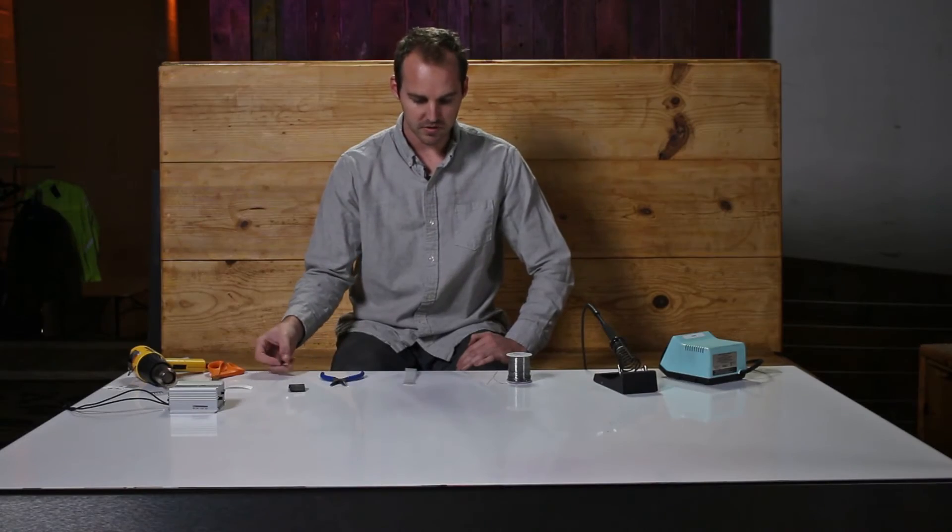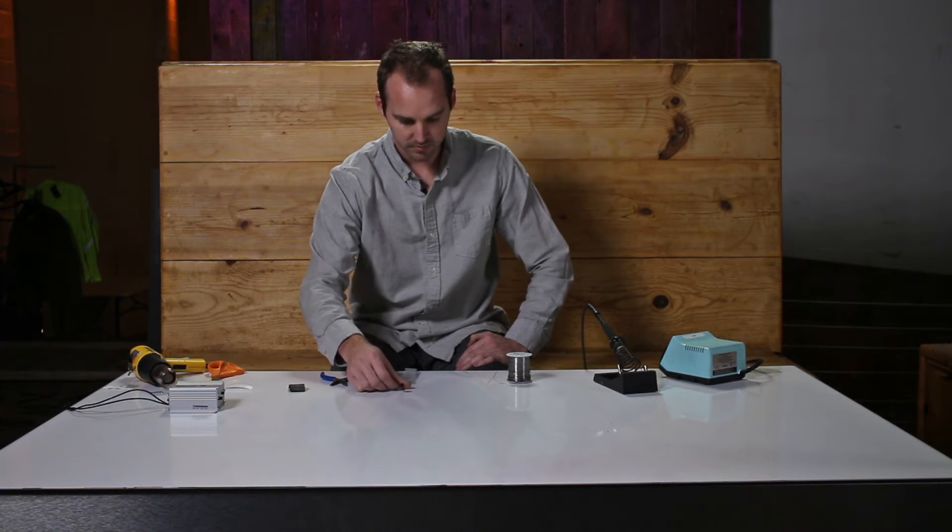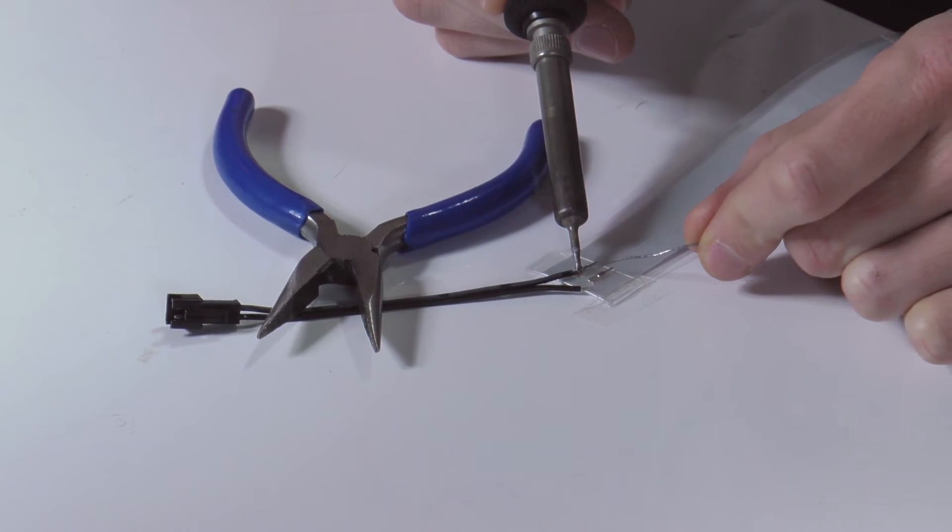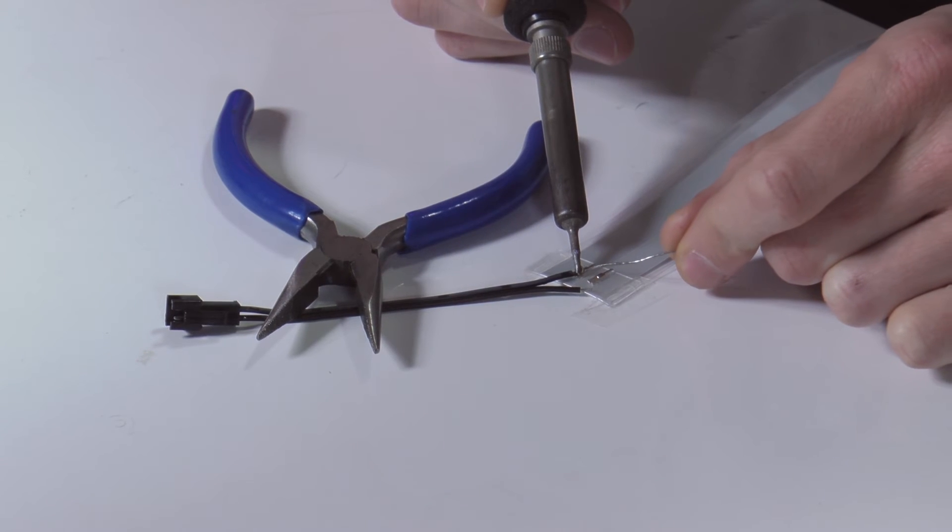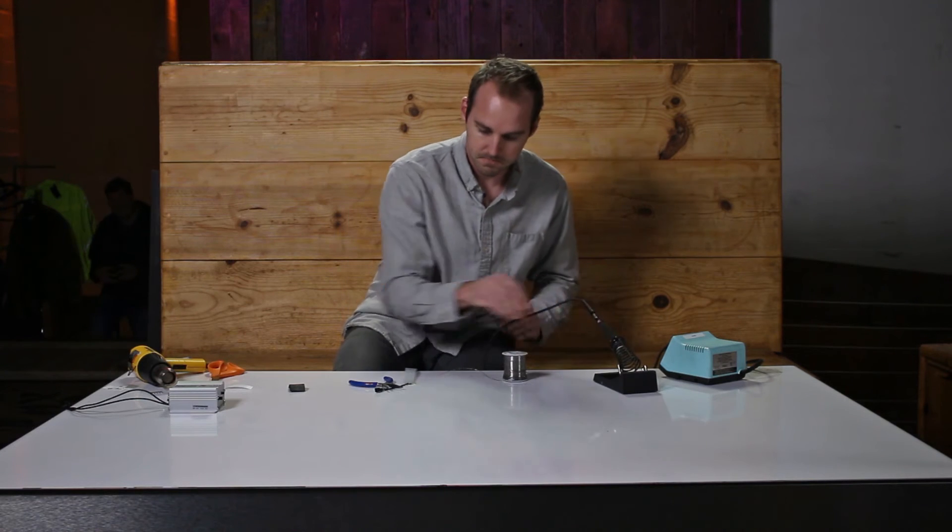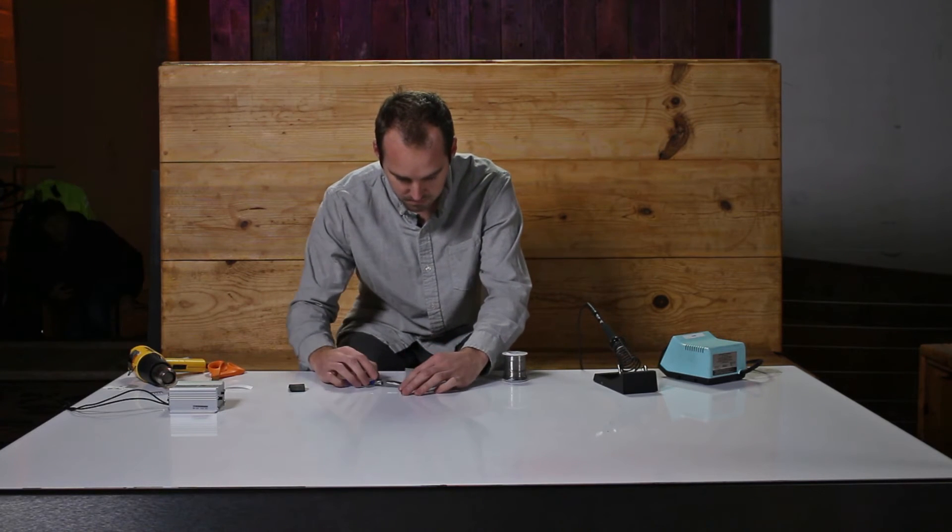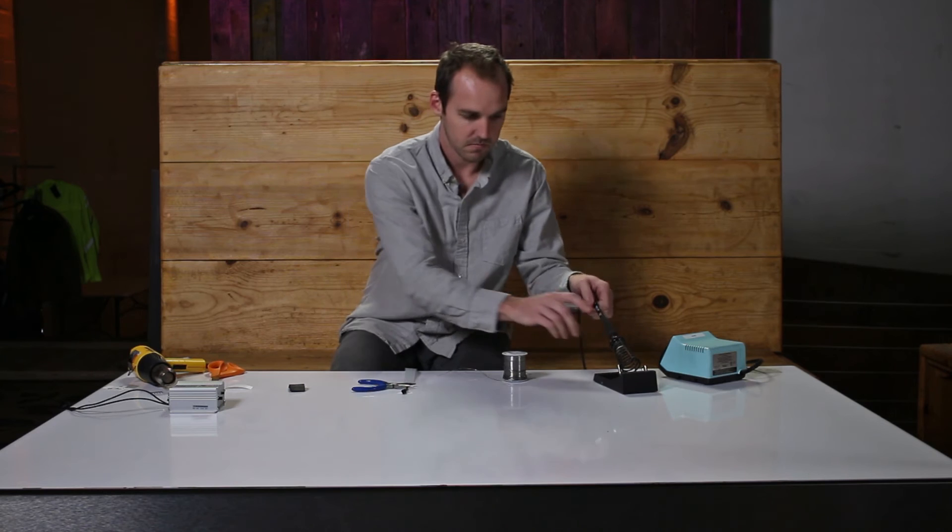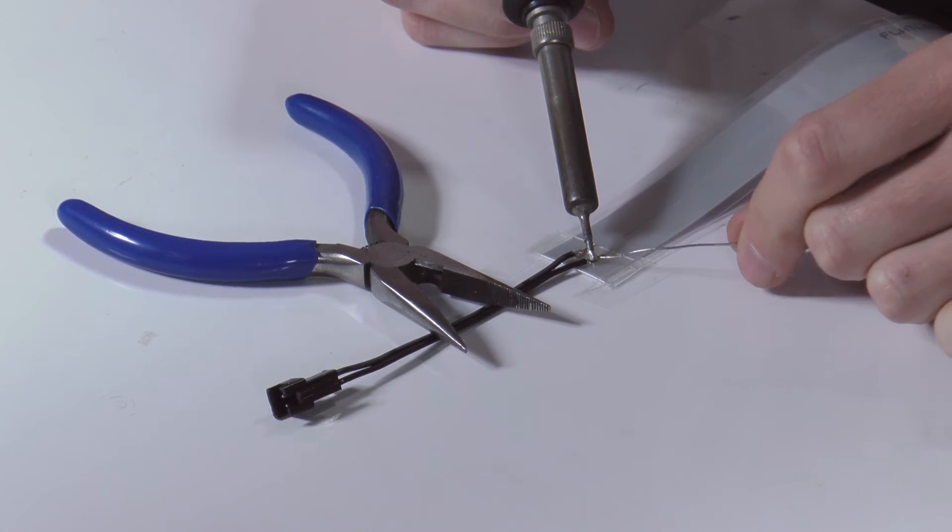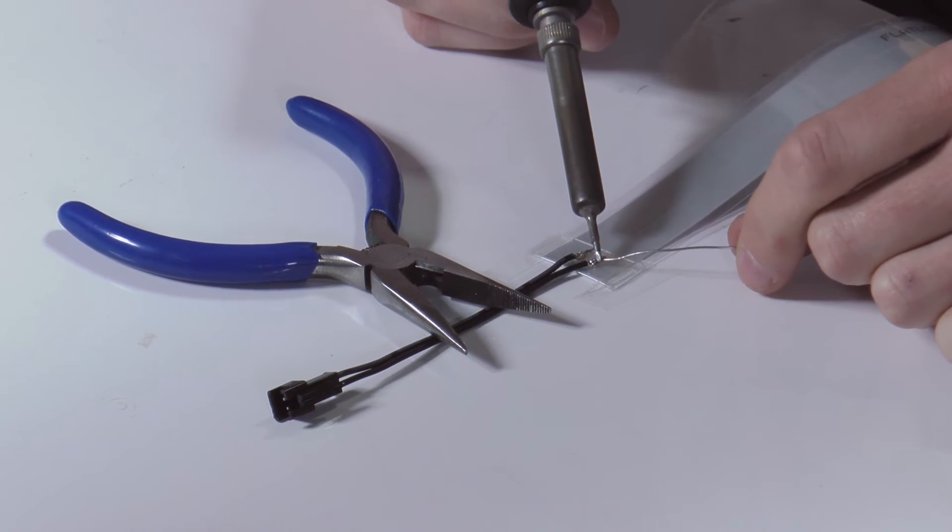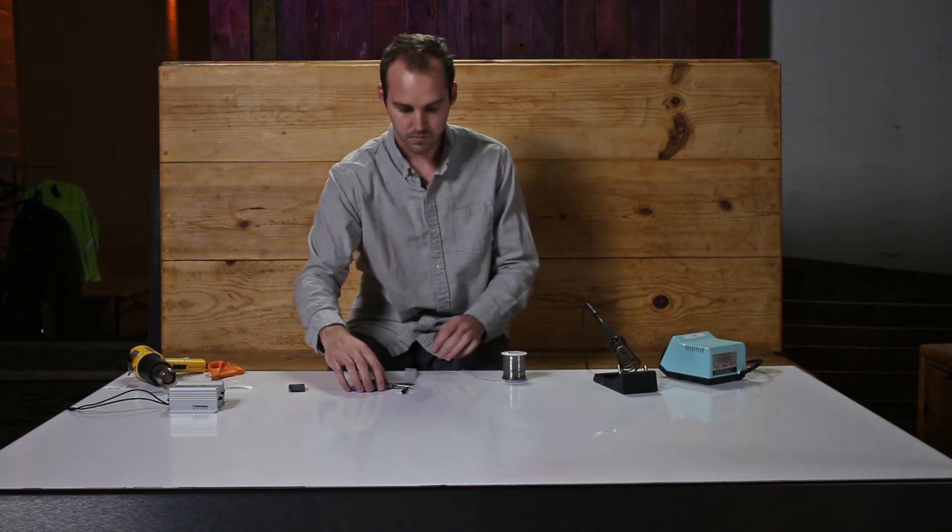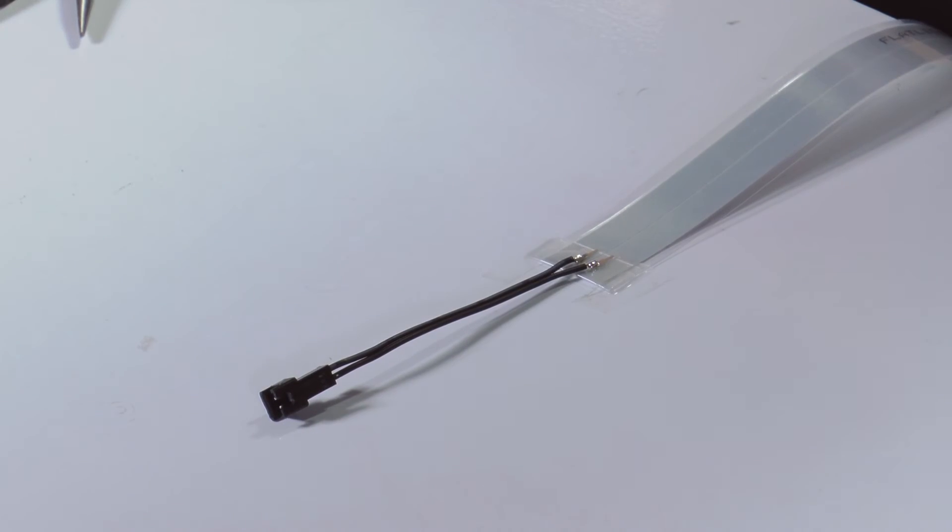So the next step is to take our connector and solder the leads onto the crimp connectors. So first we just dab a little solder and melt the first connector in. At this point you should have a nice strong connection area there.